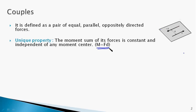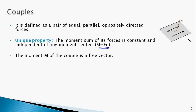The moment of a couple is in fact a vector, which lies on an axis perpendicular to the plane containing the two forces, and its direction is governed by the right-hand rule. This moment vector is called a free vector, meaning it is not tied to any particular point of the plane — you could move the moment vector to any point on the plane of the couple.